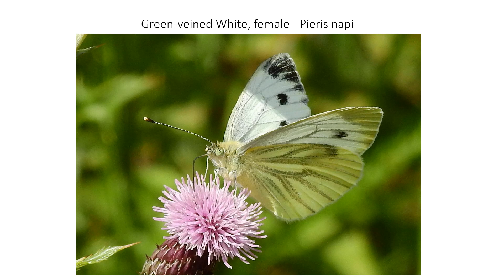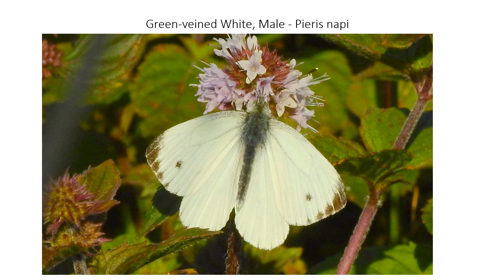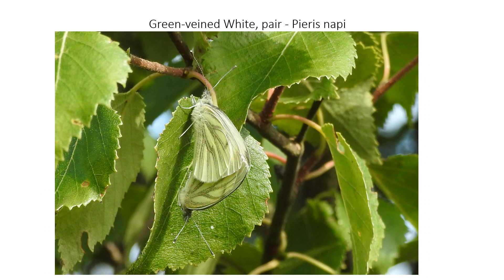Moving on to the green-veined white. You can see why it's called green-veined looking at the underside — you don't get that in the other whites, which are just pale lemon yellow, whereas this has distinctive green veins. On the tops of the wings, these little black triangles seem to bleed up the veins. The male just has little black blobs rather than a continuous black margin around the wing.